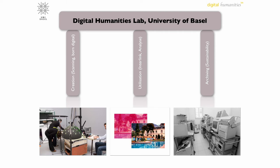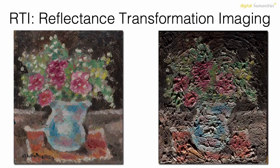One imaging technology that is particularly interesting in this context is RTI — Reflectance Transformation Imaging. Photography has many advantages: it is an authentic and reproducible way of creating a reproduction of an original. But it has one drawback: it is very static. You have to make a capture that the future application is then bound to.